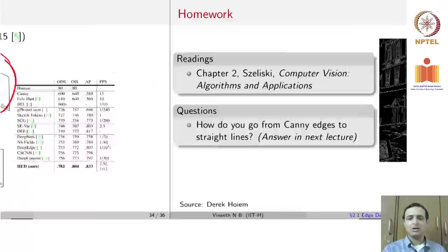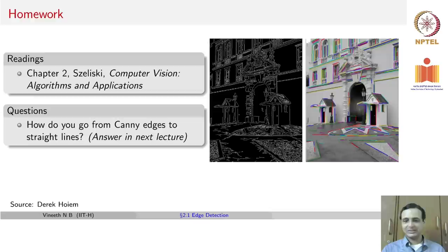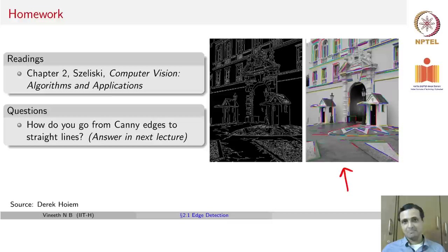That concludes our discussion on edges. As readings, you can read chapter 2 of Szeliski's book. We leave you with one question: given an image, you know how to find the Canny edges. How do you go from Canny edges to straight lines? Canny edges will find edges in any orientation because you use gradient magnitude, but how do you find the specific straight lines and what would their parameterization be? Think about it and we will answer this in the next lecture.